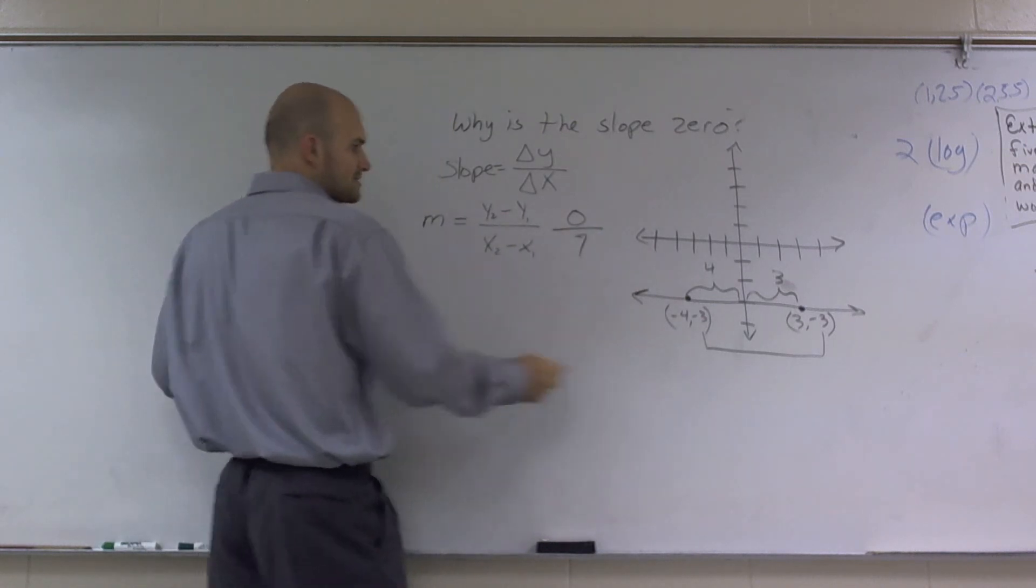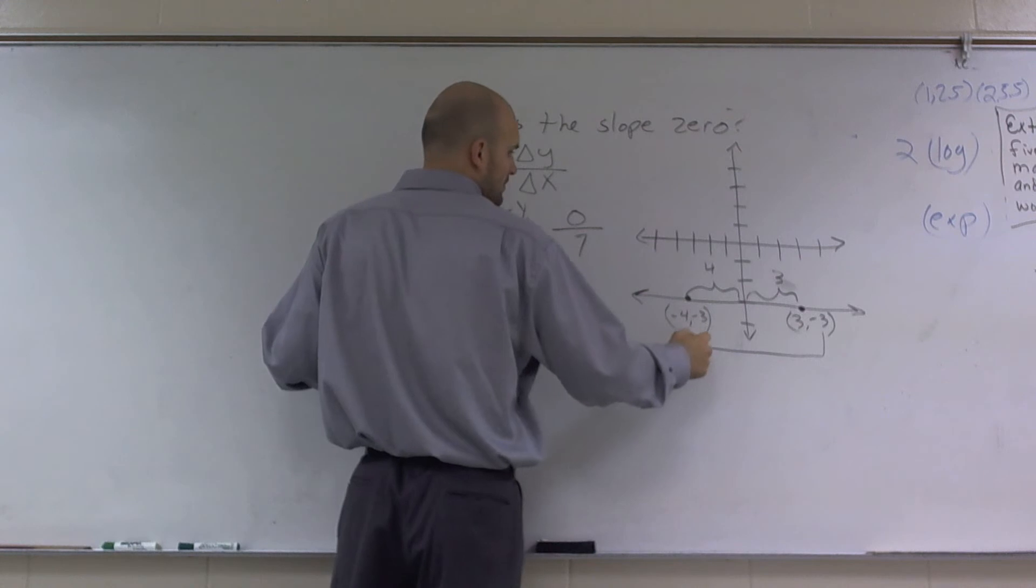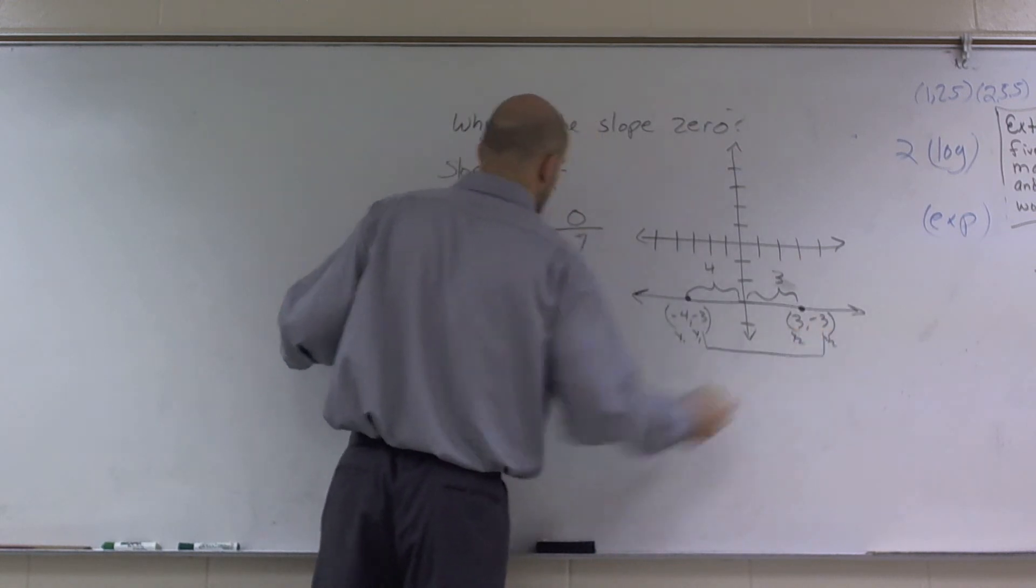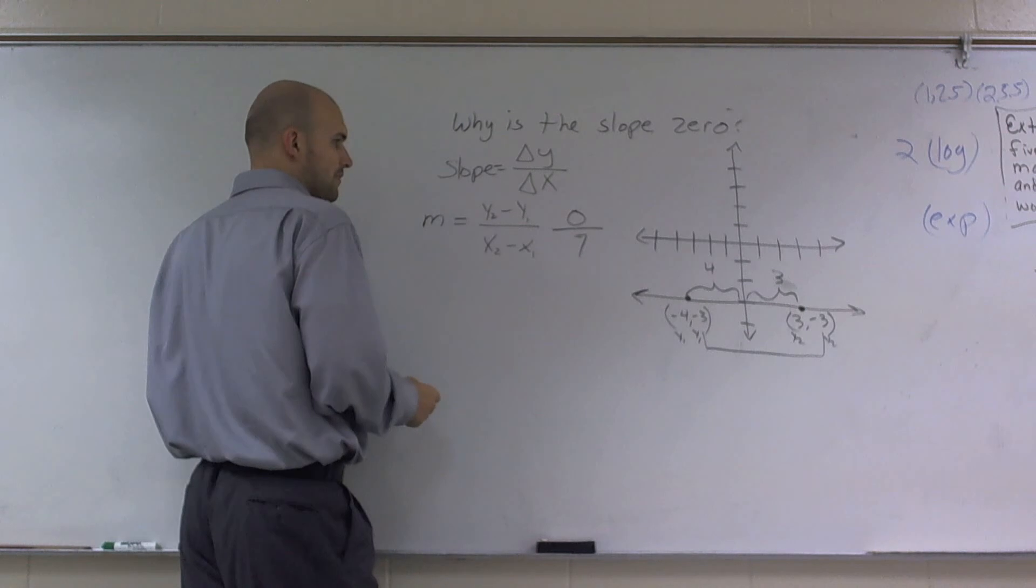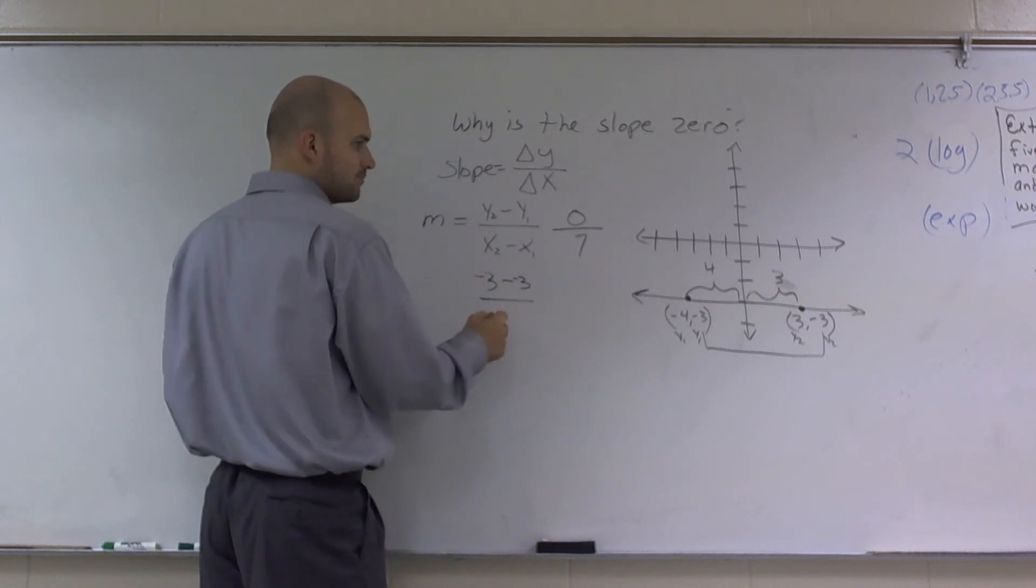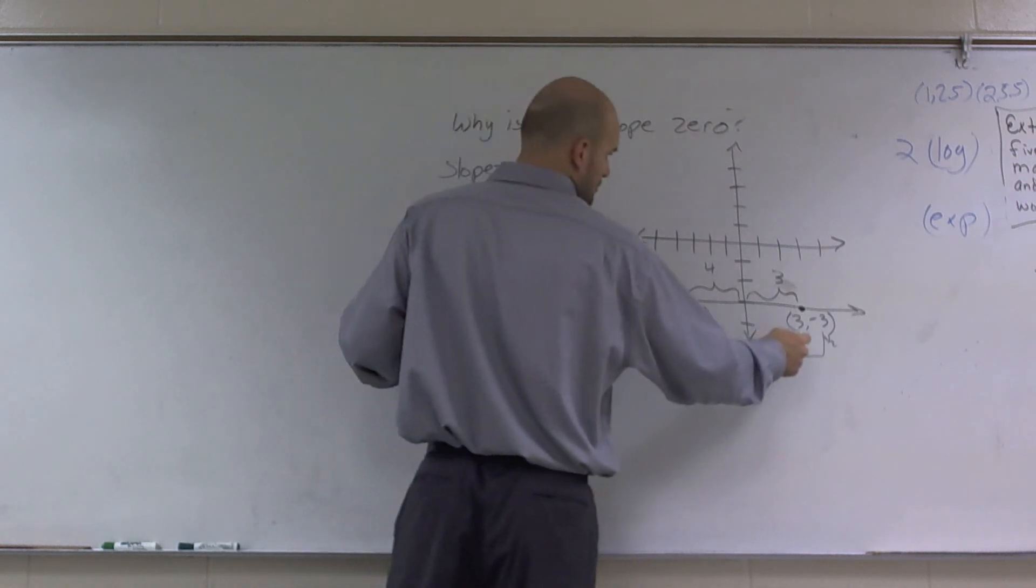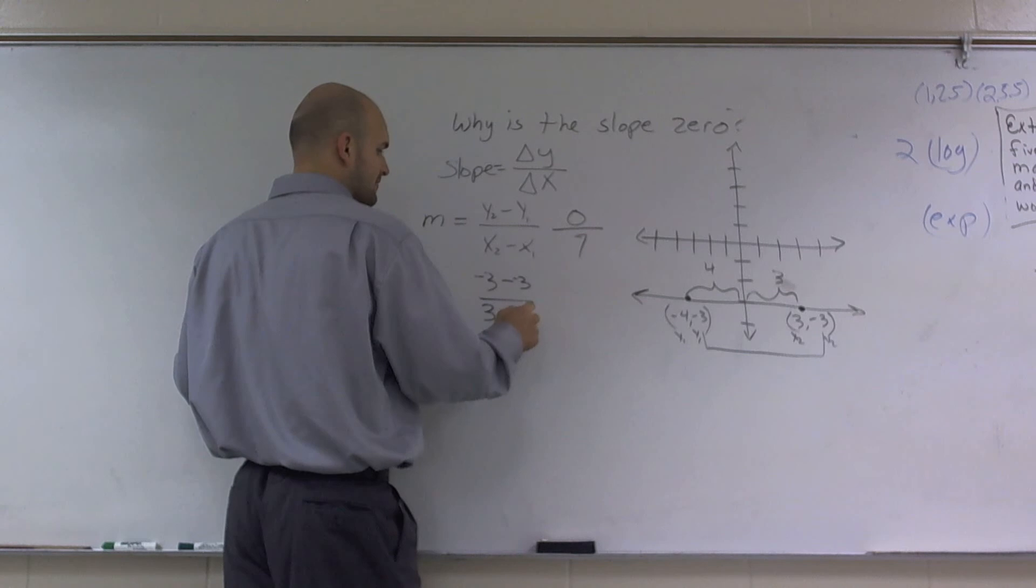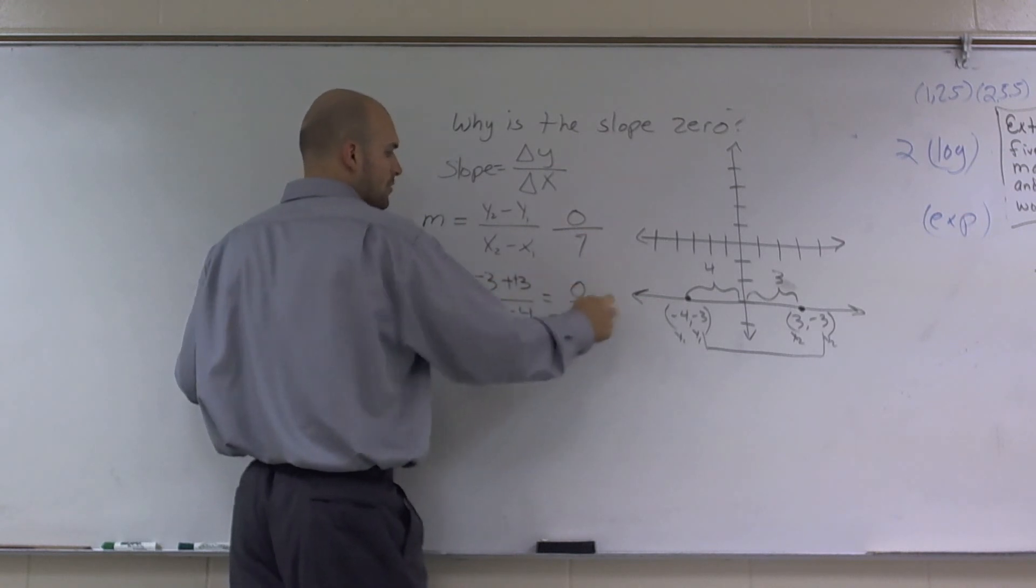Or you can just plug in the points. Let's make this x1, y1. Let's make this x2, y2. So therefore, I have negative 3 minus a negative 3 all over x2, which would be 3 minus a negative 4, which gives me, again, that becomes a double negative, 0 over 7.